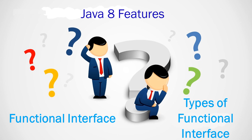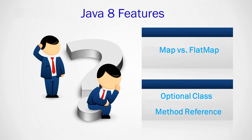Map and FlatMap: map works on a single list or collection, but flatMap can work on more than one — it combines two lists or two collection objects and can perform operations on them. Map is used when you want to perform an operation on each individual object of a collection or list.